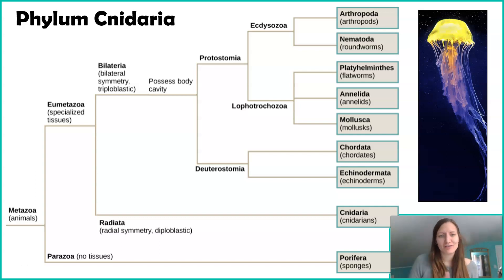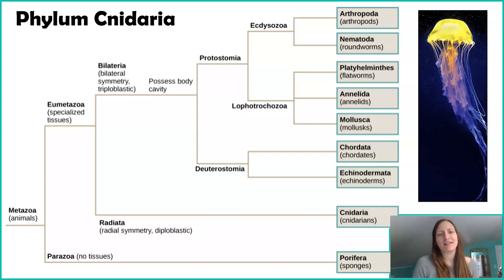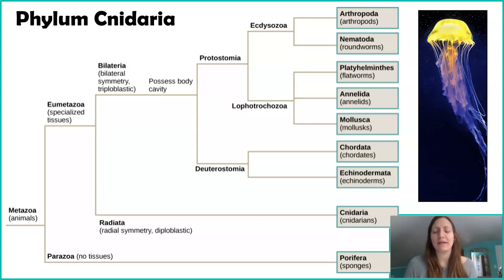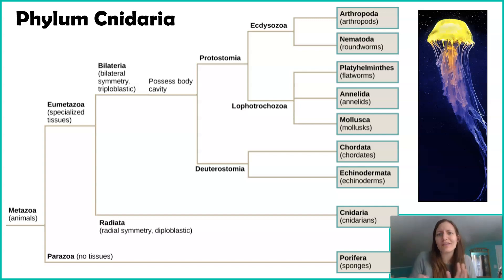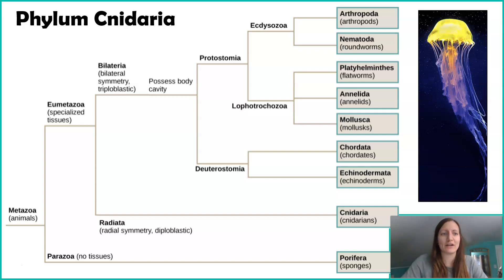Here we have a phylogenetic tree looking at all of the different animal phyla we're going to explore in this class. There are more animal phyla — not that many more. We are going to cover most of the major ones in this course, but just know that there are more than the ones listed here.